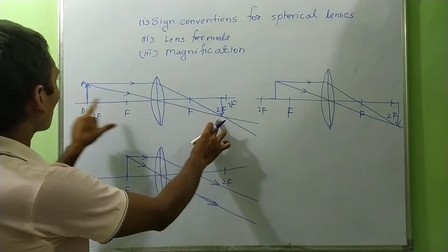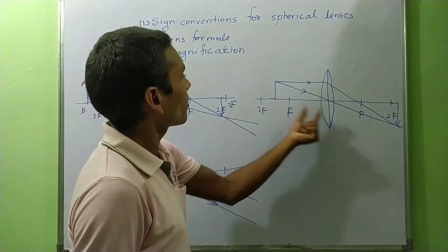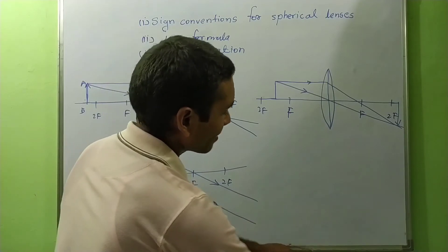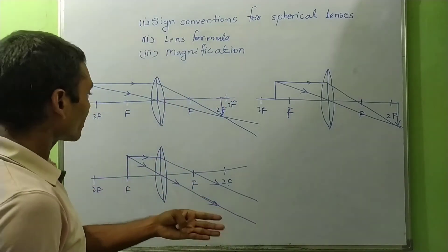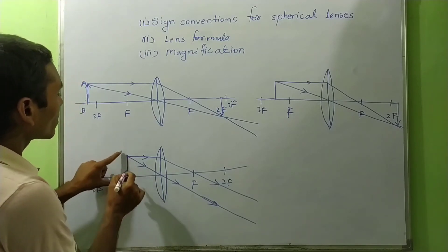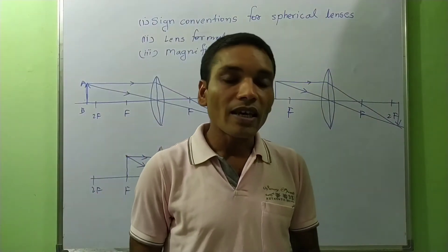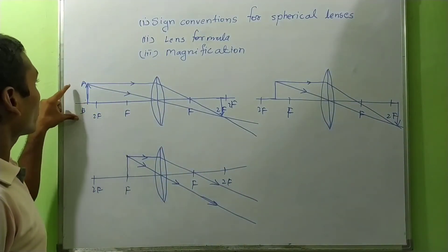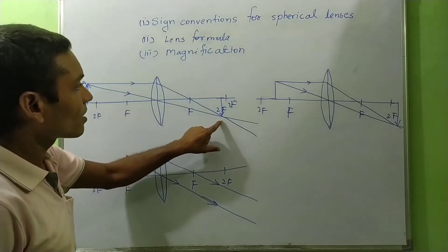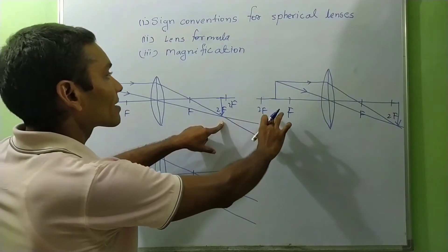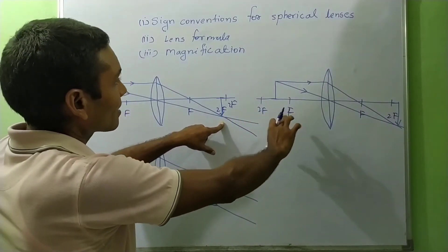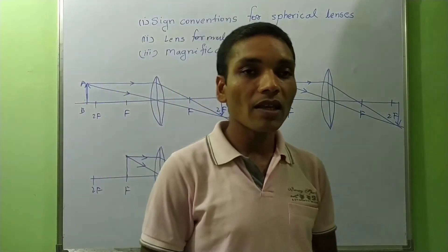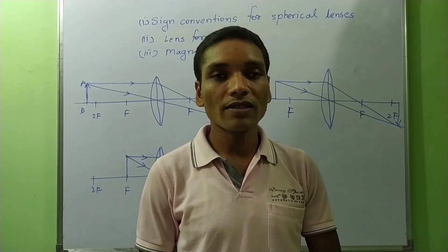The size of the image depends on the position of the object. When the object is beyond 2F, the image is smaller than the object. When the object is between F and 2F, the image is larger than the object. When the object is at F, the image is highly magnified. As the object is brought closer to the lens, the size of the image increases and the image distance also increases.